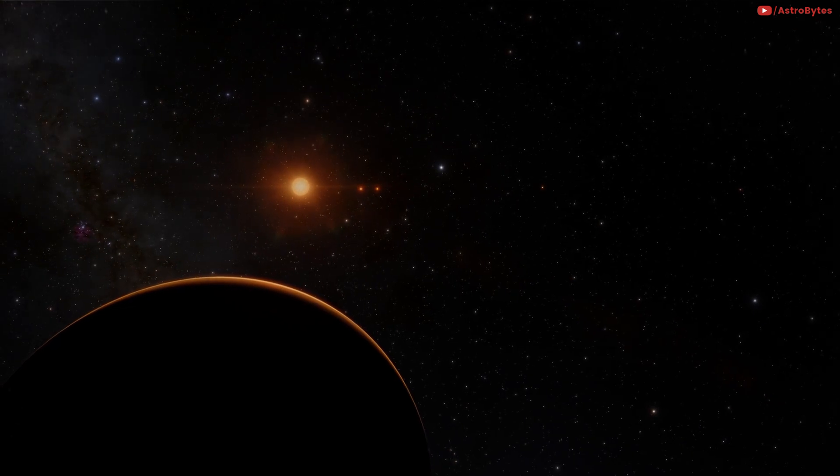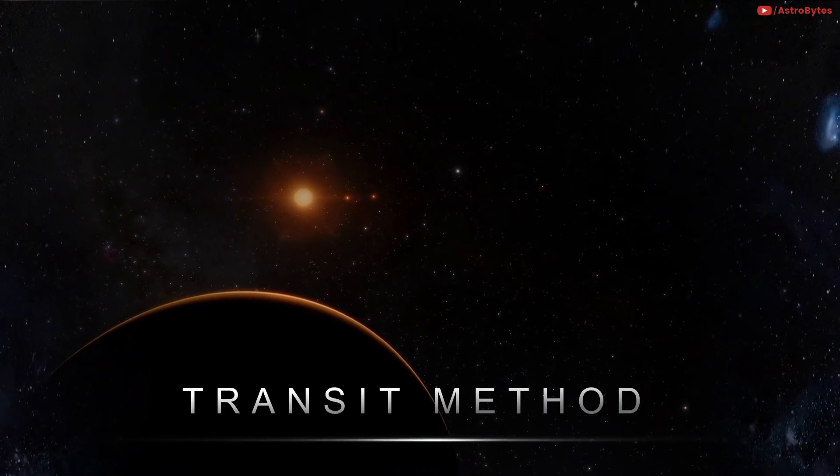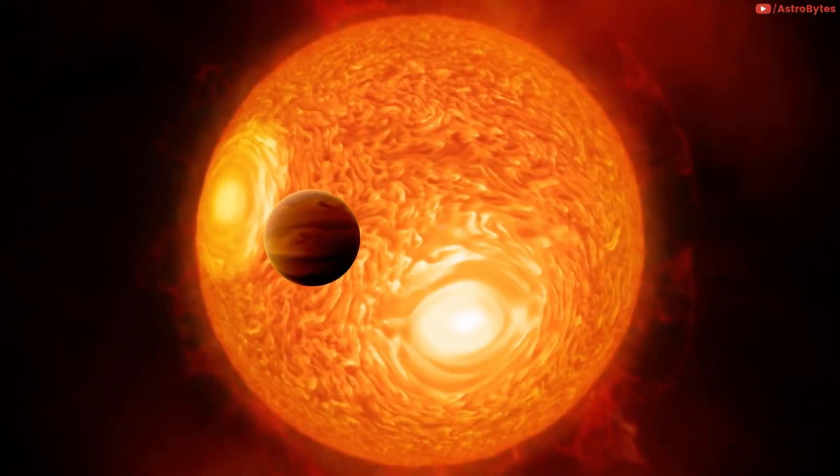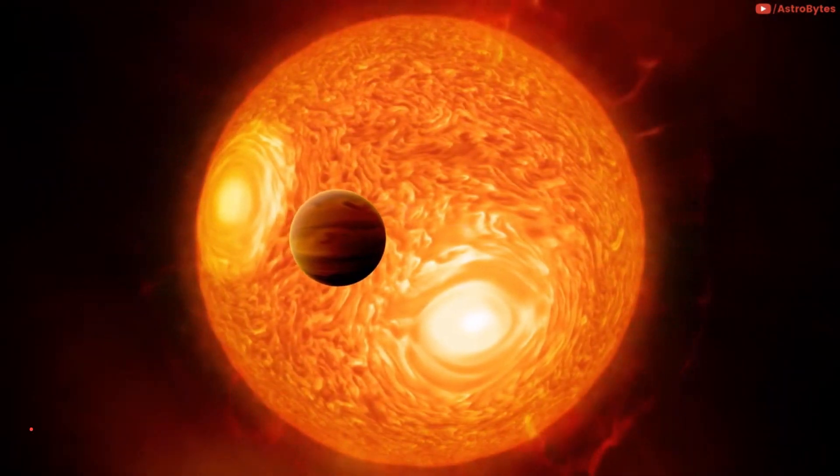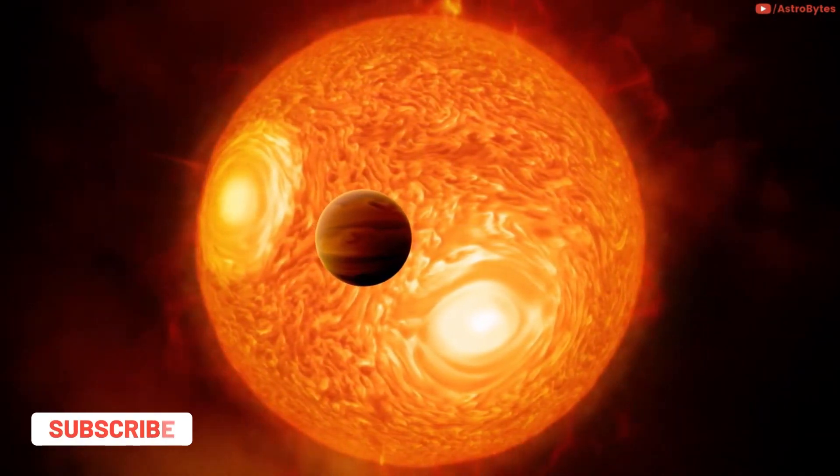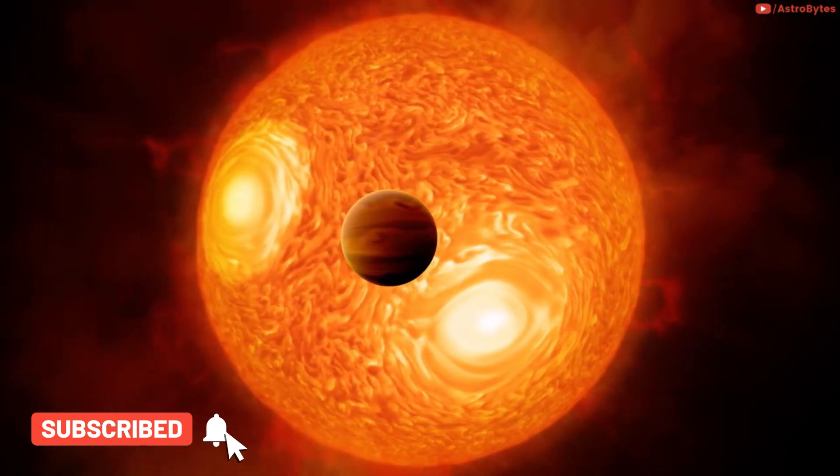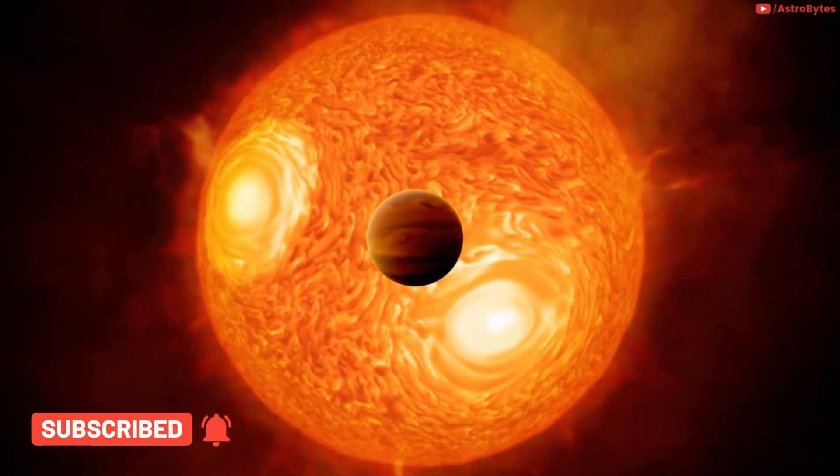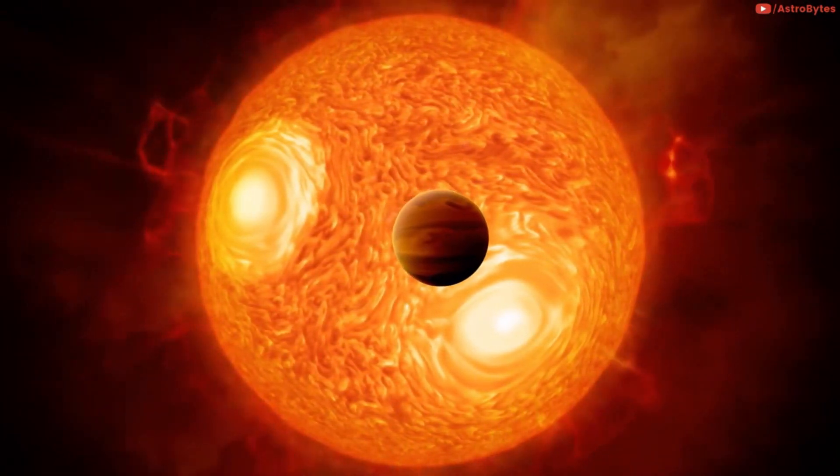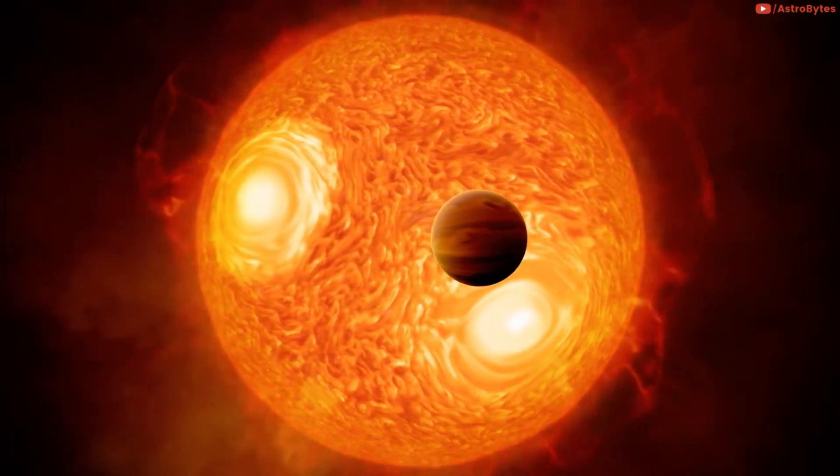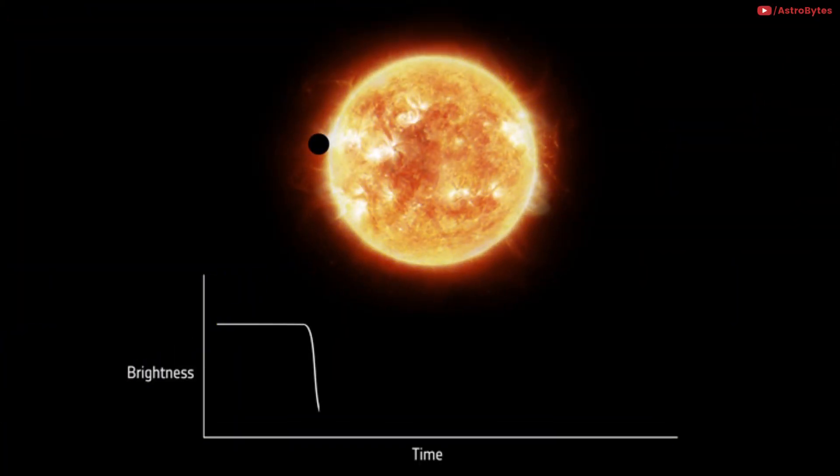Most exoplanets are detected using something called the transit method. When a planet passes in front of its star, it's called a transit. As the planet transits in front of the star, it blocks out a little bit of the star's light. That means a star will look a little less bright when the planet passes in front of it. Astronomers can observe how the brightness of the star changes during a transit. This can help them figure out the size of the planet.